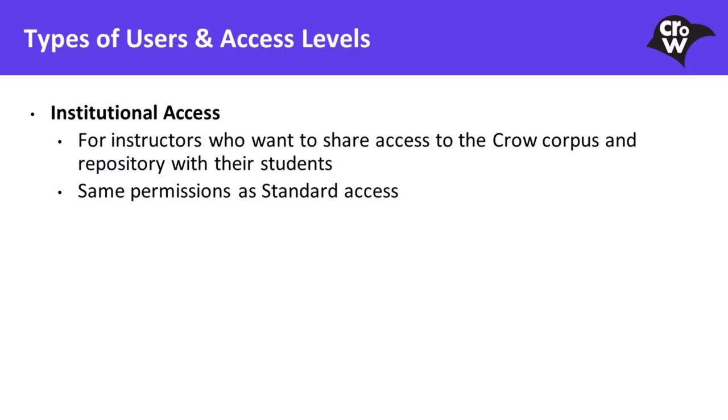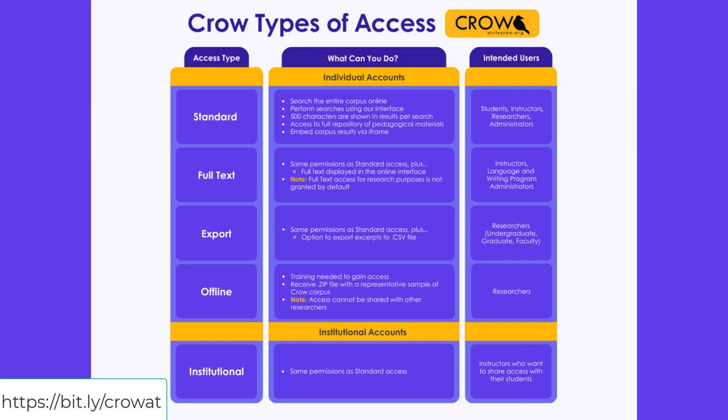Alternative to individual accounts, institutional accounts can be used by multiple individuals across an organization. The email address on record for institutional accounts should be accessible by the group manager, since it is used for initial account verification and password setup. Institutional accounts have one level of access: institutional. This type of access is intended for instructors who want to share access to the CROW corpus and repository with their students. It has the same permissions as standard access. The graphic below can be used to quickly reference the account and access service types for users of CROW's corpus and repository.